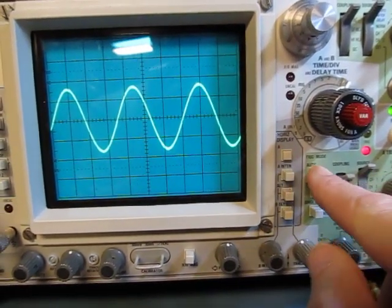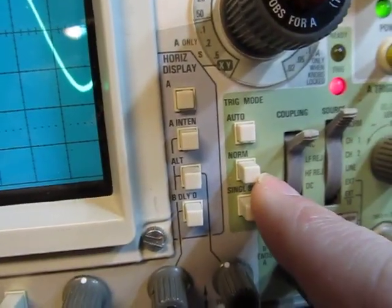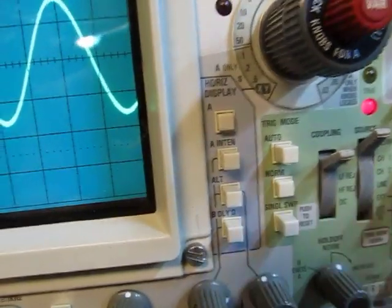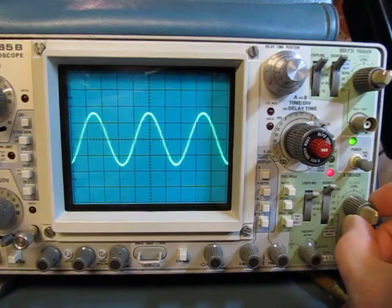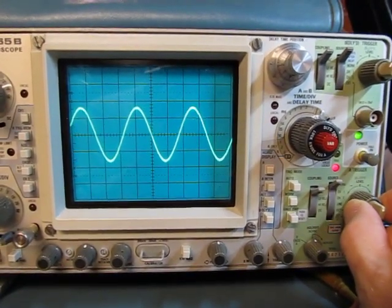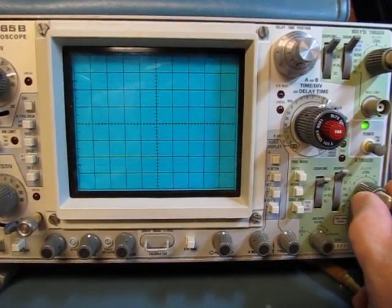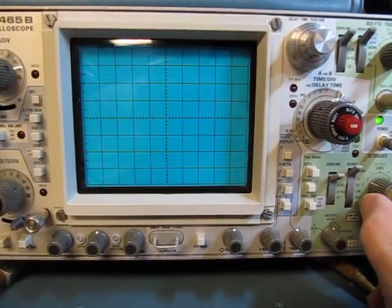Now, if I change the trigger mode from auto to the next one down here, which is normal, and we can see the display hasn't changed, and if I change the trigger amplitude, you can see that I can still move up or down, but watch what happens if I go too far below. The trace goes away.